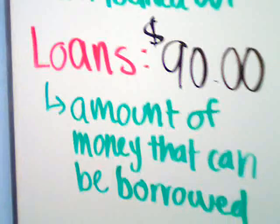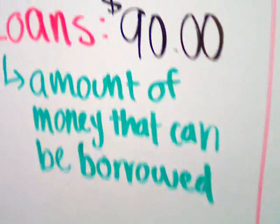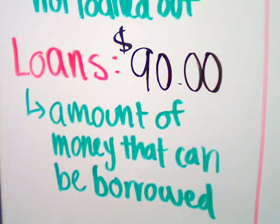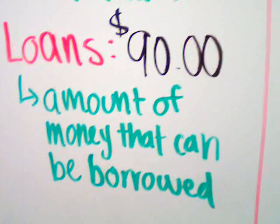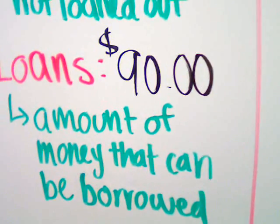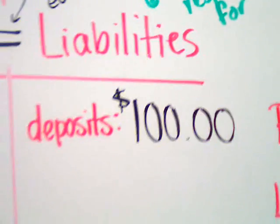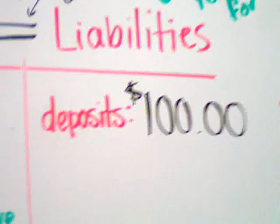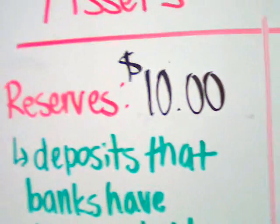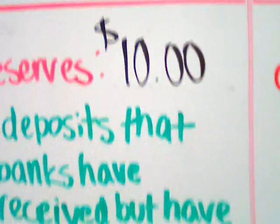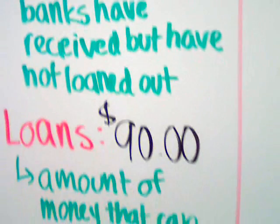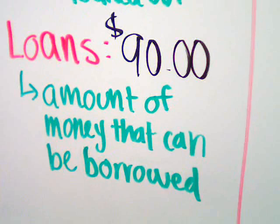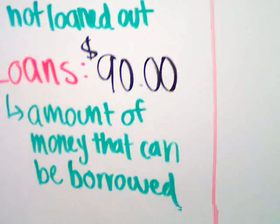Loans are the amount of money that can be borrowed from that bank out of the initial deposit. So if the initial deposit was $100, which is what they're liable or responsible for, they're going to keep 10% of it no matter what — which would be $10 — and they're going to loan out $90.